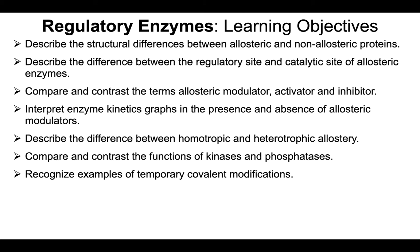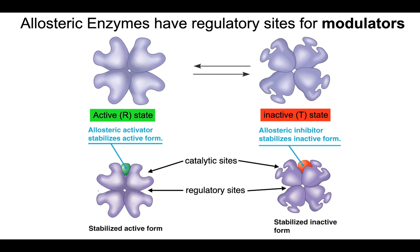In this video we're going to be discussing regulatory enzymes. The learning objectives are: describe the structural differences between allosteric and non-allosteric proteins; describe the difference between the regulatory site and the catalytic site of an allosteric enzyme; compare and contrast the terms allosteric modulator, activator, and inhibitor; interpret enzyme kinetics graphs in the presence and absence of allosteric modulators; describe the difference between homotropic and heterotropic allostery; compare and contrast the functions of kinases and phosphatases; and recognize examples of temporary covalent modifications.